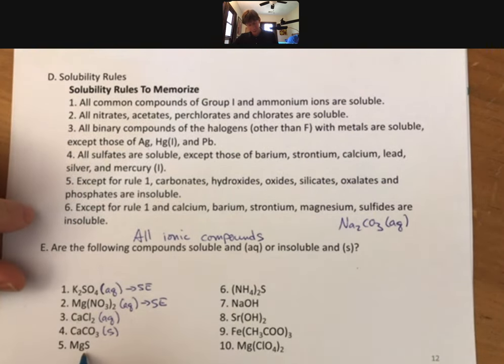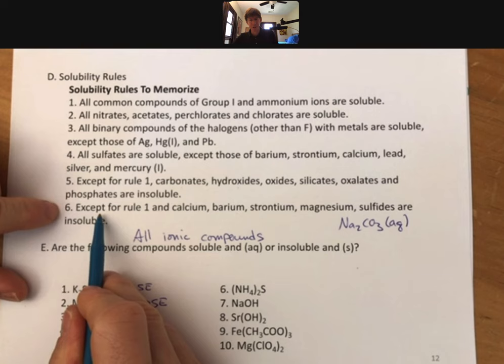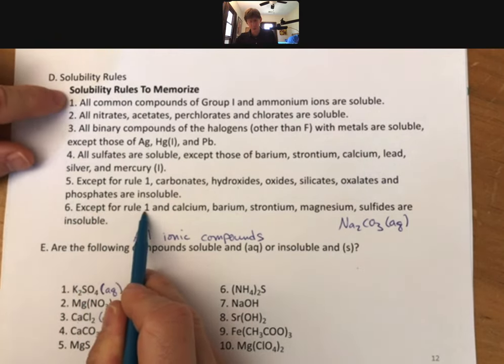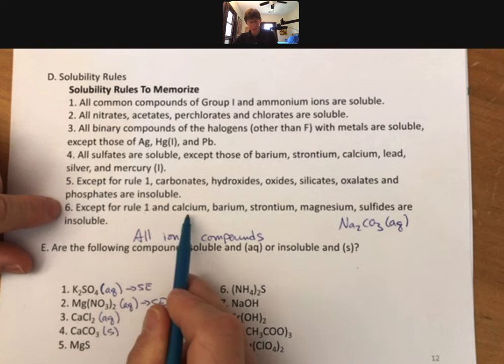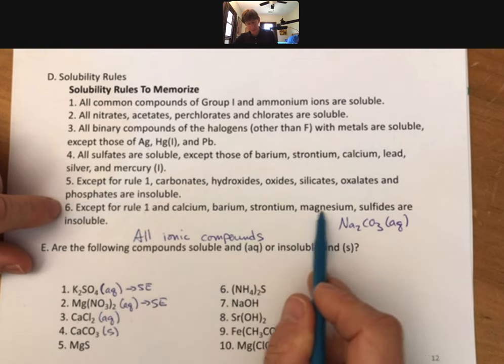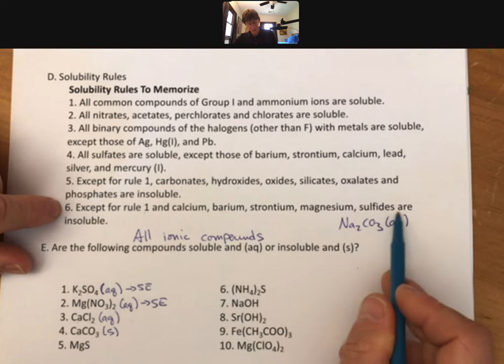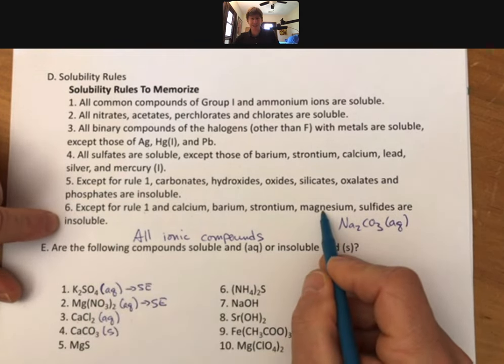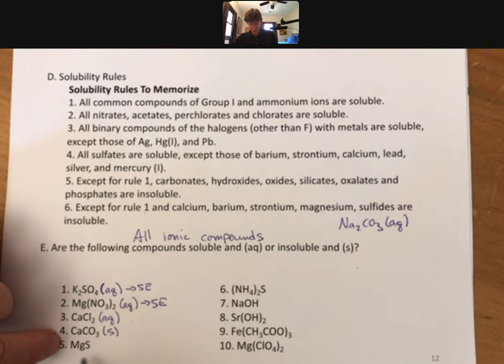Magnesium, so okay, so now we're all the way down to rule number six, which says except for rule number one, which are group one and ammonium, and calcium, barium, strontium, magnesium, so there's a few more, sulfides are insoluble. Magnesium is one of these exceptions. Magnesium sulfide, and this is sulfide, is soluble.